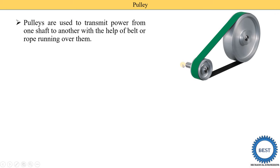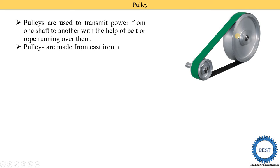Here in this diagram, we see this is the driving shaft and this is the driven shaft. On the shaft, the pulley is installed, and on this pulley, a belt or rope is running over them. So, a pulley is used to transmit power from one shaft to another. Pulleys are made from various metallic materials like cast iron, cast steel, wrought iron, or aluminium.